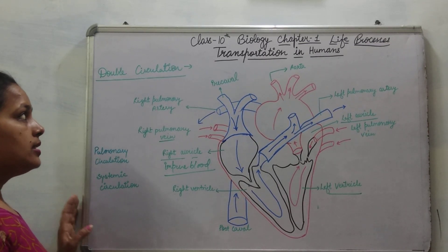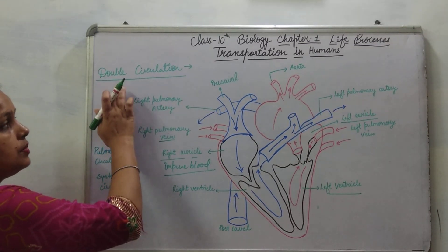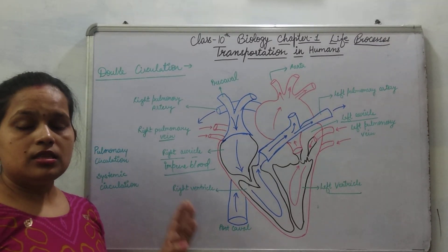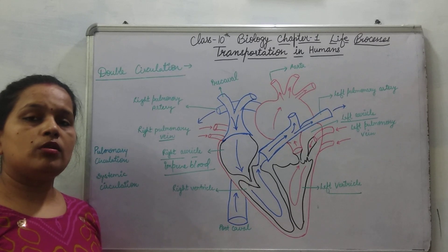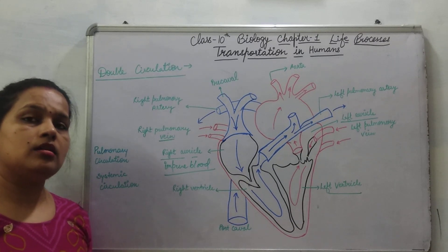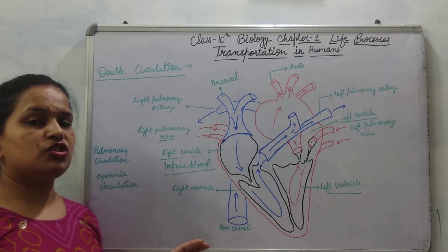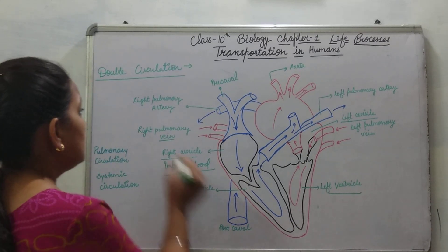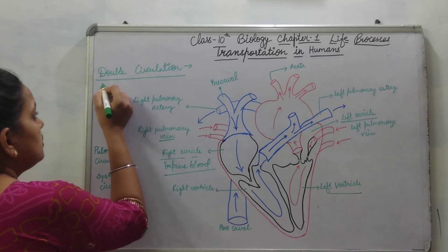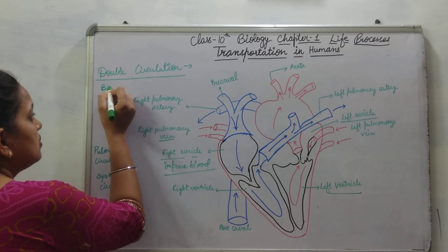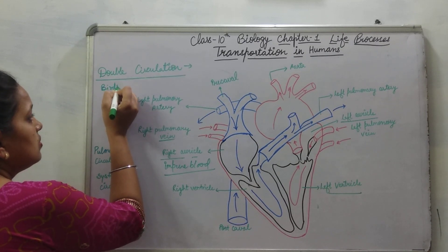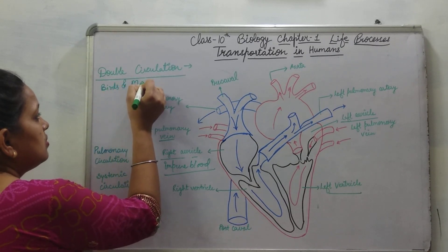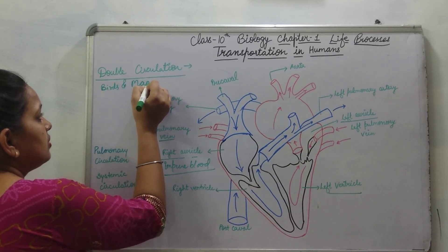Next topic is double circulation. This circulation is found only in higher organisms such as birds and mammals.